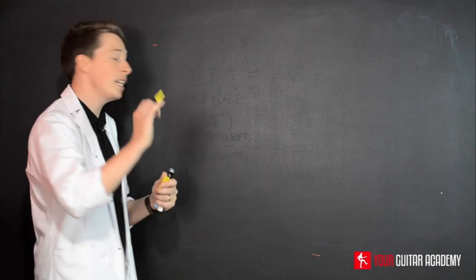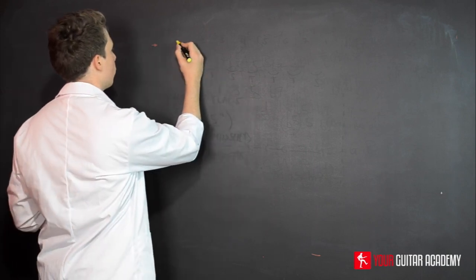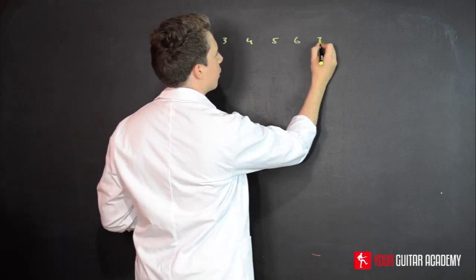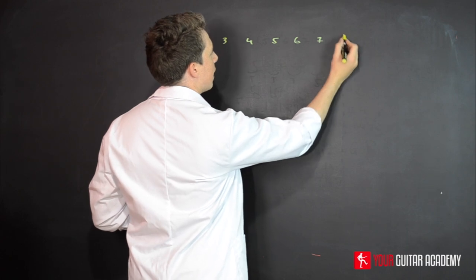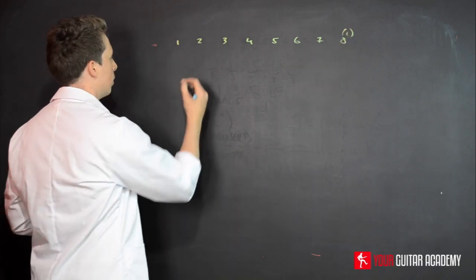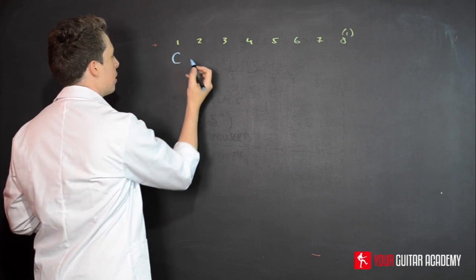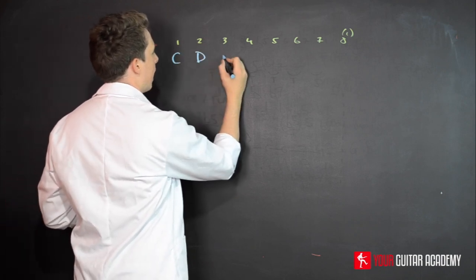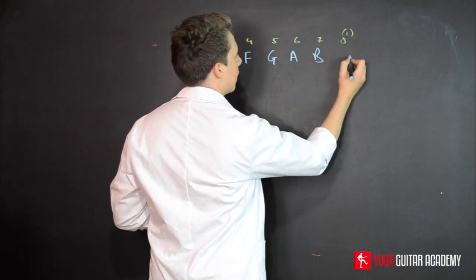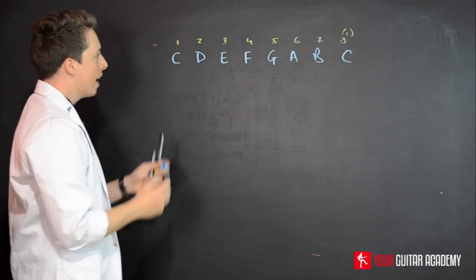Let me quickly write out the C major scale. So one, two, three, four, five, six, seven, and then back to eight or one. And then we'll write out C major—very easy, no sharps or flats: C, D, E, F, G, A, B, and C. That